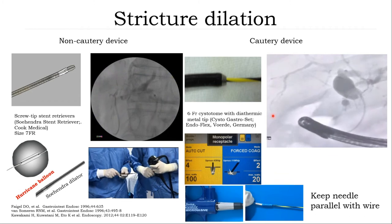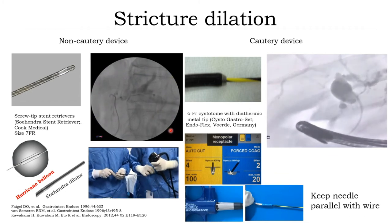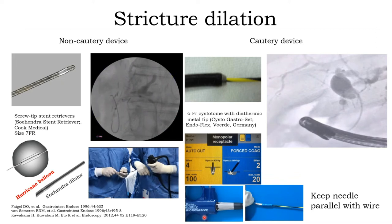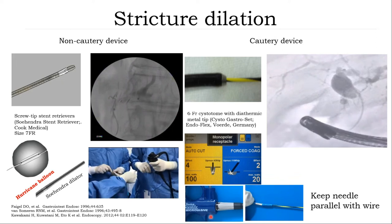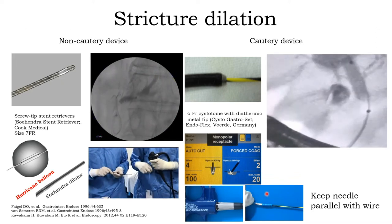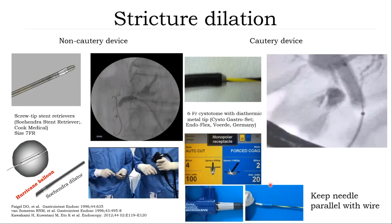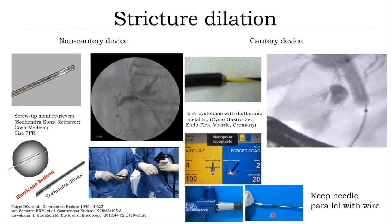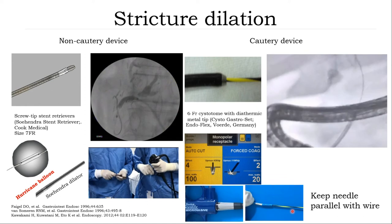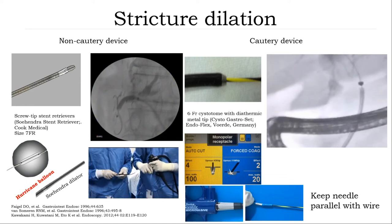If these two devices are not available, you can use the standard sphincterotome. For this device, you need to open only half of the knife and keep the cutting wire parallel to the wire to avoid perforation or bleeding.